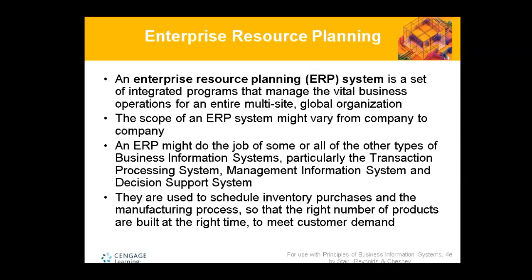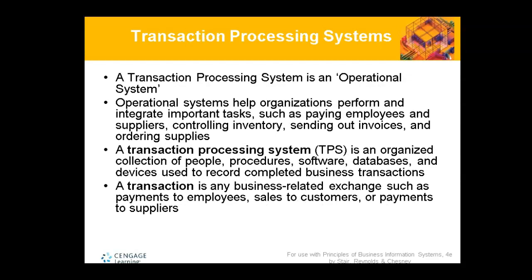Enterprise Resource Planning, or ERP, consists of integrated programs — all the components needed in a business in order to function. One key part of ERP is Transaction Processing Systems. In a business, a transaction processing system could be a cashier till — it records purchases, tells you how much change to give the customer, and tracks what's going in and out in terms of stock.